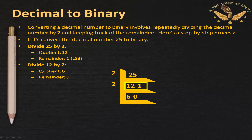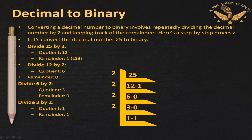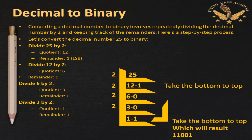Next, divide 6 by 2 and you get quotient 3 and remainder 0. Then divide 3 by 2: remainder is 1. Since 2 cannot divide 1 (1 is smaller than 2), we stop. We then read the remainders from bottom to top, giving us 11001. So the binary representation of 25 is 11001.